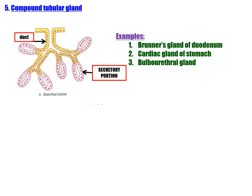Third: compound tubular gland — branched duct present, secretory portion is branched tubular. Examples: Brunner's gland of the duodenum, cardiac gland of the stomach, and bulbourethral gland. These are all examples of compound tubular glands, classified based on the shape of the gland and whether unicellular or multicellular.